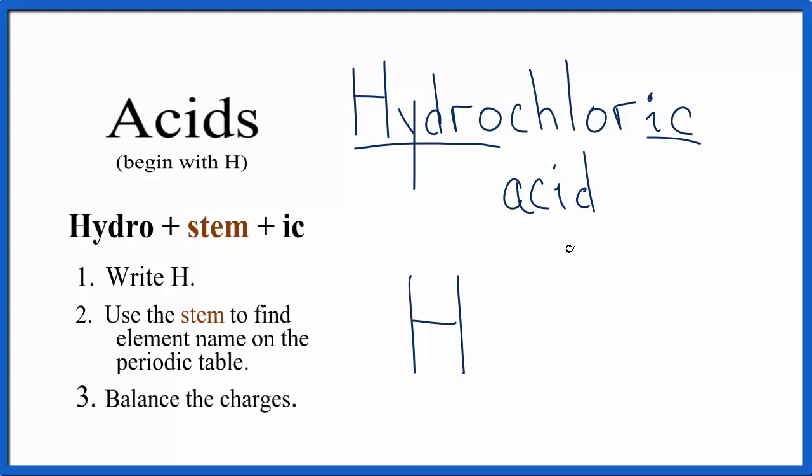Then we go to the periodic table to find the element. We see that's chlorine, so we write Cl. Now we need to balance the charges. Chlorine has a negative one charge, hydrogen has a plus charge. Because of that, the plus and the minus balance out.